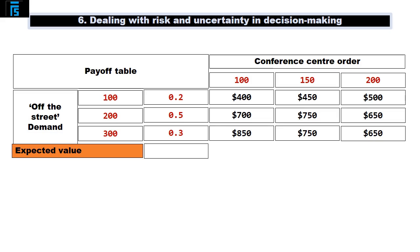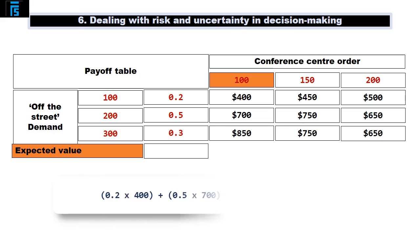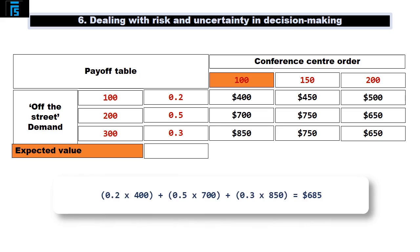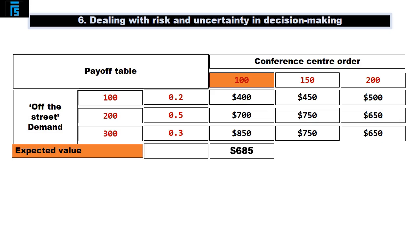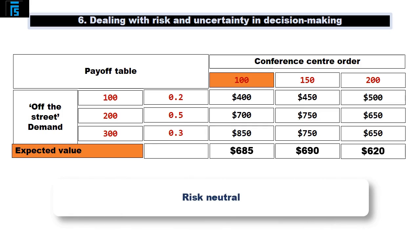For example, if Jack signs up to supply 100 sandwiches a day to the conference centre — the first column — he could expect on average a contribution of 0.2 times $400 plus 0.5 times $700 plus 0.3 times $850, which equals $685. The expected contribution was maximised when Jack agreed to supply 150 sandwiches a day to the conference centre, assuming he is risk neutral and willing to base his decisions on the average outcome.